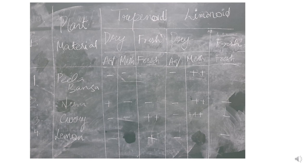This is how you can record your observations in a tabulated manner. Please do not forget to write botanical names as well as the common names, and then you can record your observations like this. Thank you to the students and I hope you have understood the practical. Thank you.